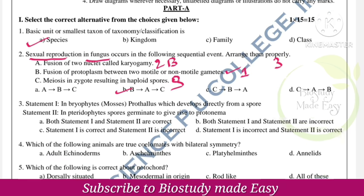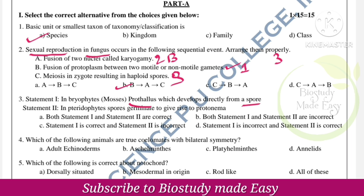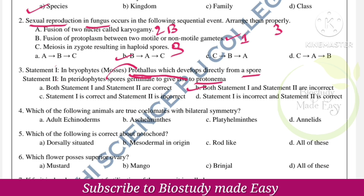Next, a statement about bryophytes: mosses — both statements one and two are incorrect. Next question: which of the following animals are true coelomates with bilateral symmetry? In this method, bilateral symmetry — Annelida has bilateral symmetry.